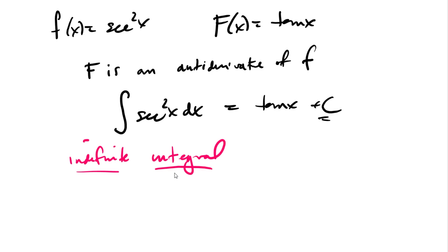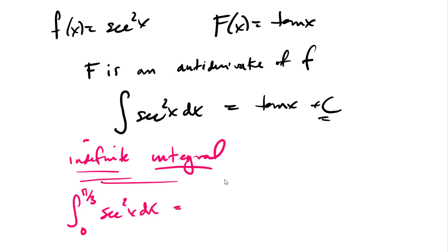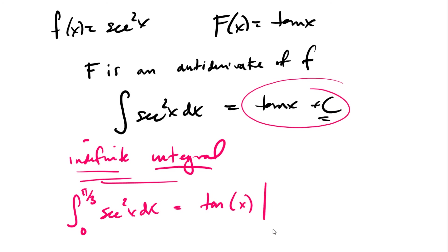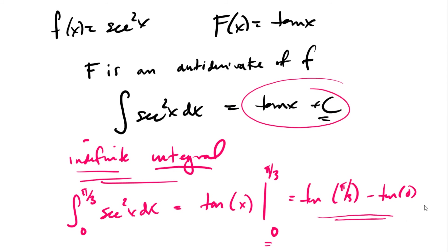We compute indefinite integrals because they are useful: if I can compute indefinite integrals, I can apply the Fundamental Theorem of Calculus. For example, if I had the integral from 0 to π/3 of sec²(x) dx, I can evaluate this using the antiderivative tan(x) — evaluating at π/3 and at 0. So this is just tan(π/3) minus tan(0). The notation is shorthand for storing the computed antiderivative before plugging in numbers. The ability to compute antiderivatives is what lets us compute definite integrals — if I can do indefinite integrals, I can do areas.